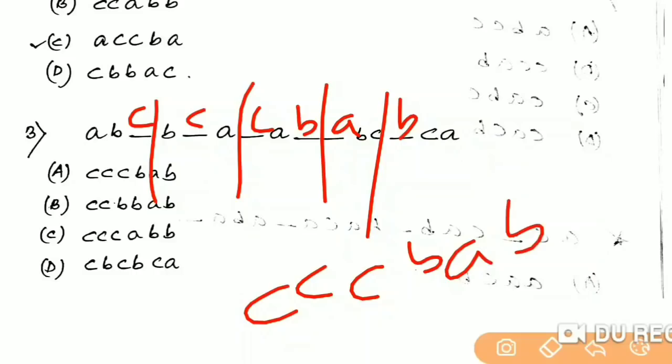Where is option A? This is C, C, C, B, A, B. Let's go to the next character.